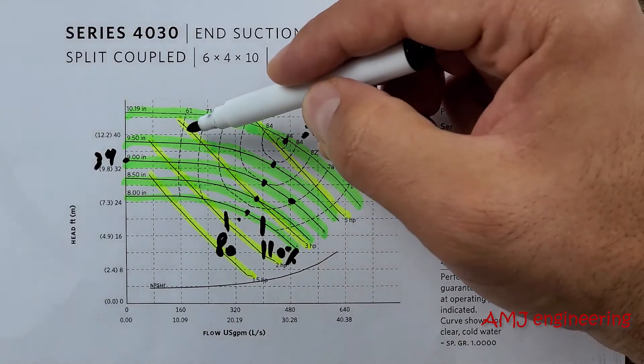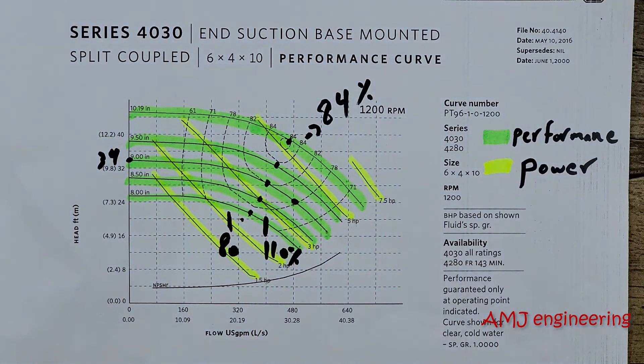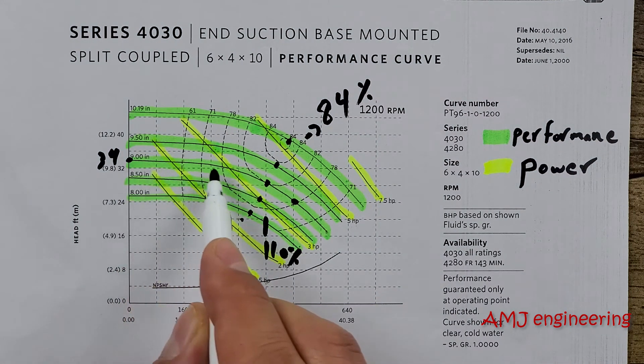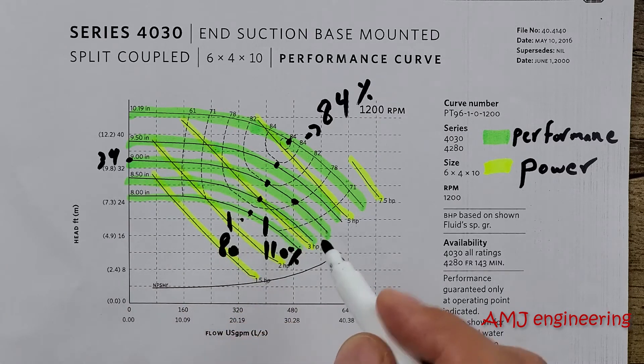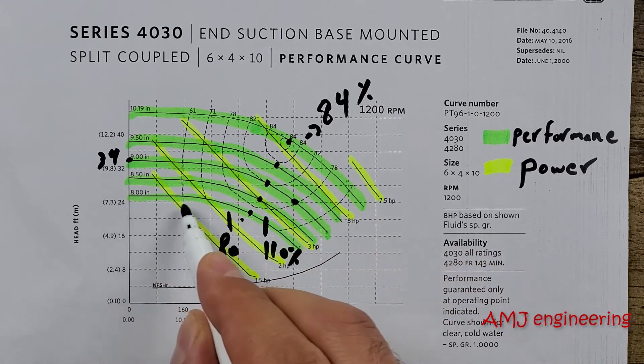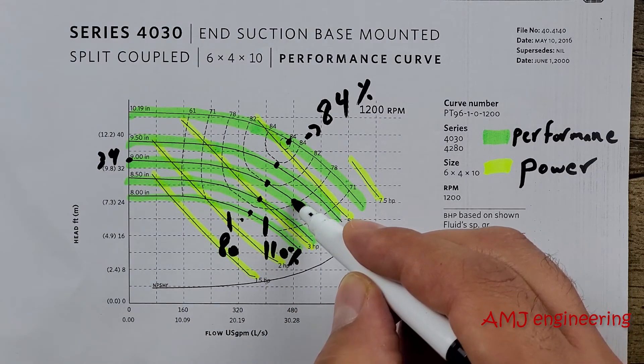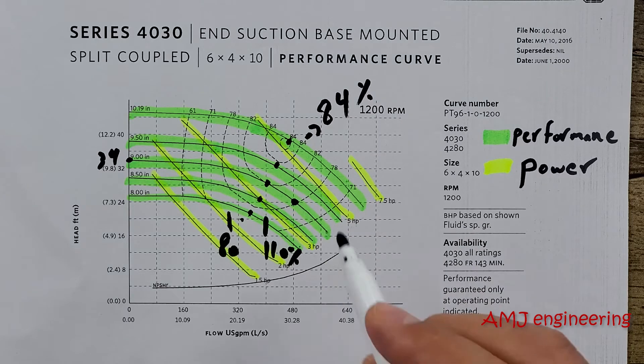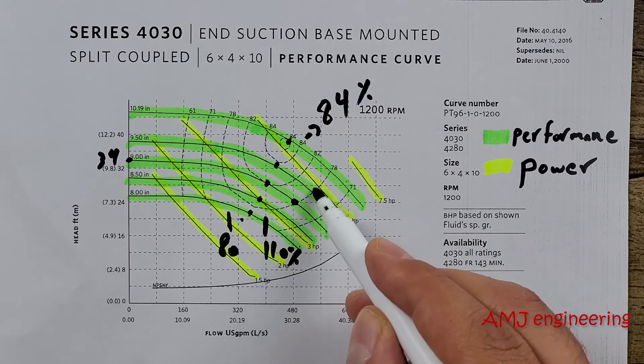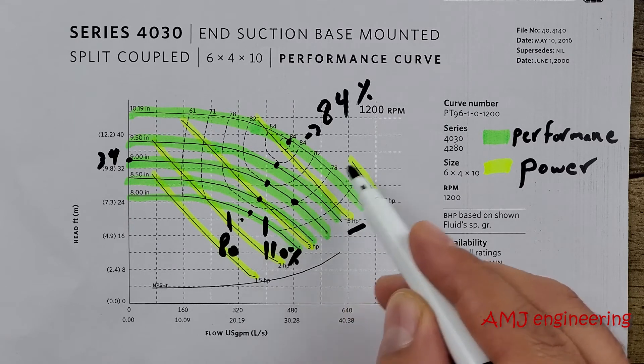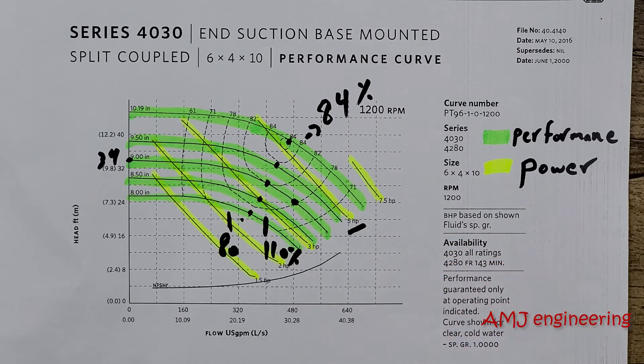The brake horsepower curves indicate the horsepower required to operate a pump at a given point on the performance curve. In our example here, for the 9 inch impeller size and for 24 feet head and 480 USGPM flow, the required horsepower is 5 horsepower. We have to go for the line above the performance curve, so it's 5 horsepower in our case here.